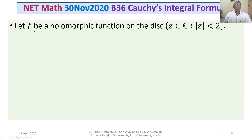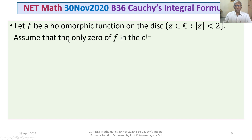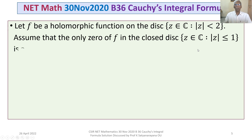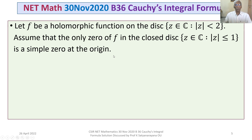The problem is: let F be a holomorphic function — that means an analytic function — on the disk, the set of Z belonging to C, the set of complex numbers, such that mod Z is less than 2. Assume that the only zero of F in the closed disk — the set of Z in C such that mod Z is less than or equal to 1 — is a simple zero at the origin.